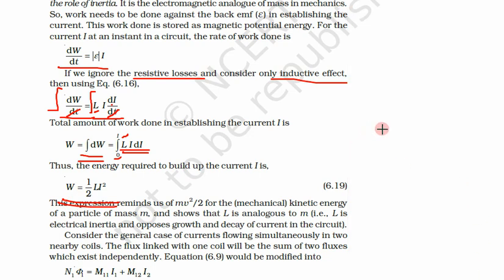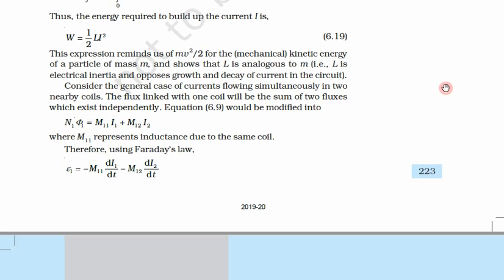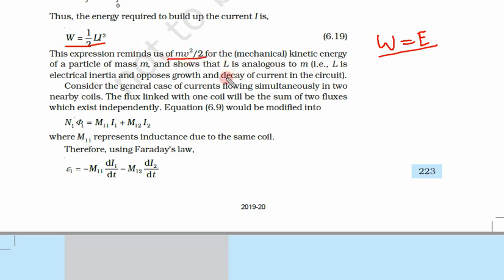Substituting, we get W = ½L·i². This is the total work done in increasing the current from 0 to i, which equals ½L·i². We have considered no resistive term, only the inductive term. This work done equals the energy stored.